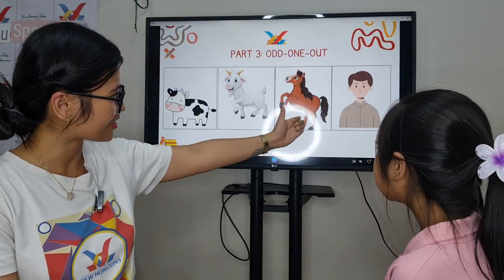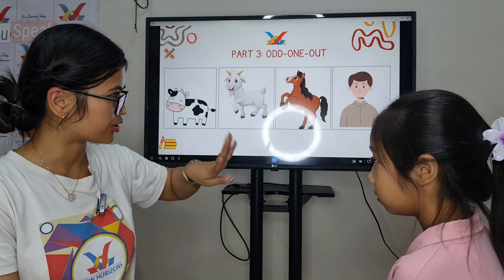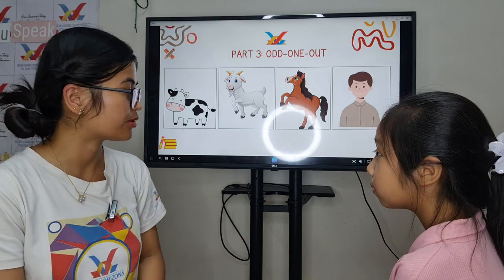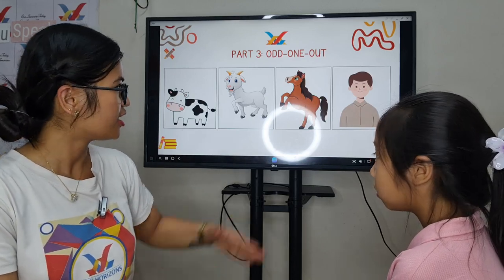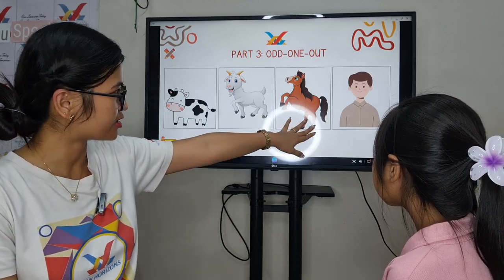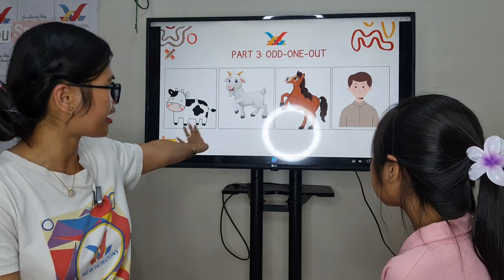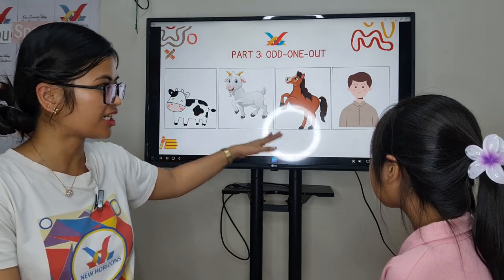So now in the next part I have four pictures. You will tell me which picture is different. For example, in this picture the man is different because cow, goat, and horse — they are animals.